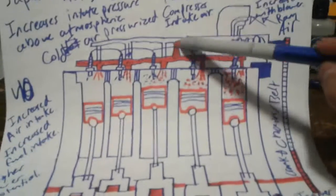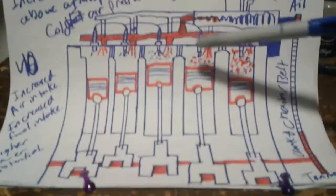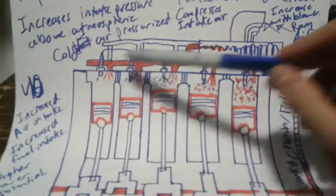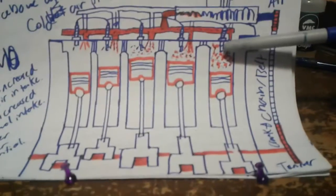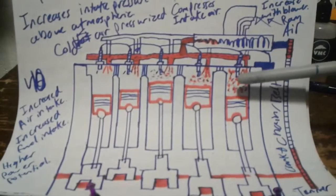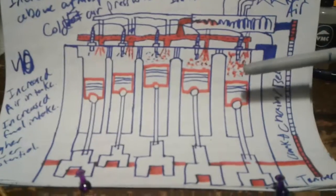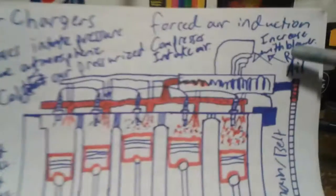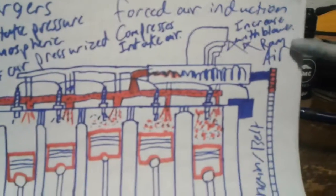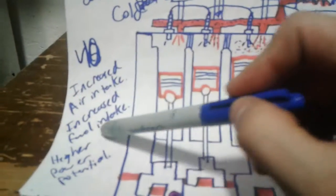The compressor charges air and forces it into each combustion chamber, raising the pressure and raising the volumetric efficiency of the motor. It will provide anywhere from 6 to maybe 15 plus increases. The blower and ram air intake, depending on how fast you're going, increase air intake, increase fuel intake, more power, higher power potential.